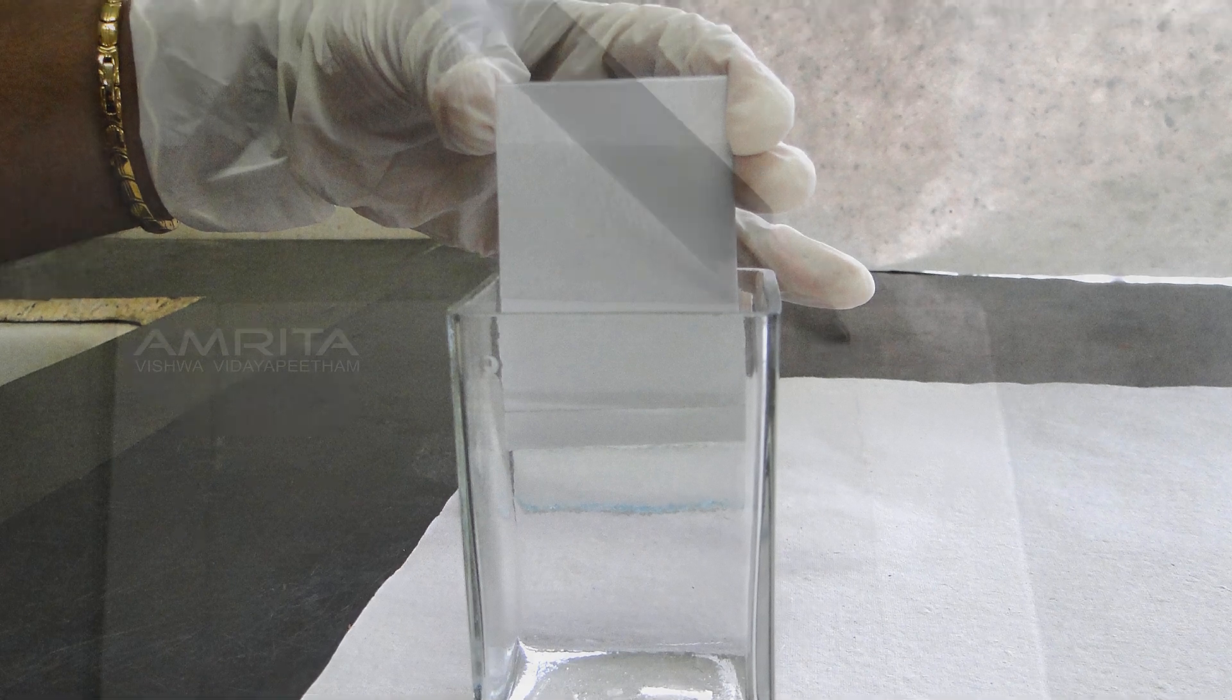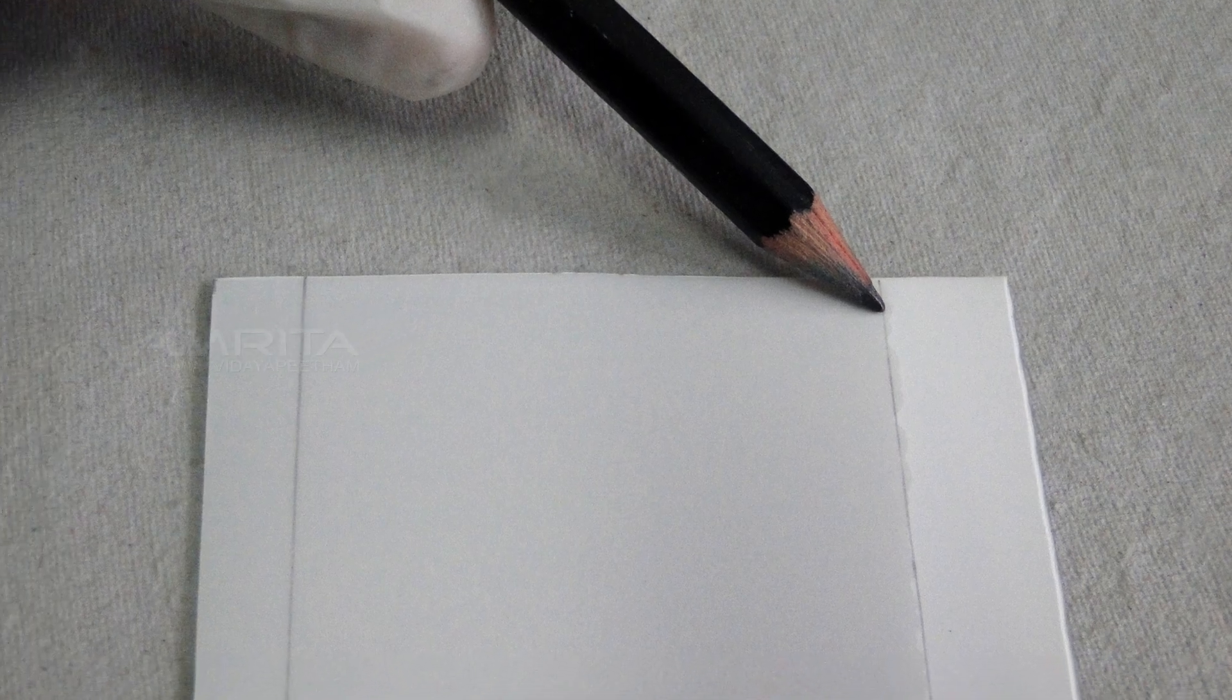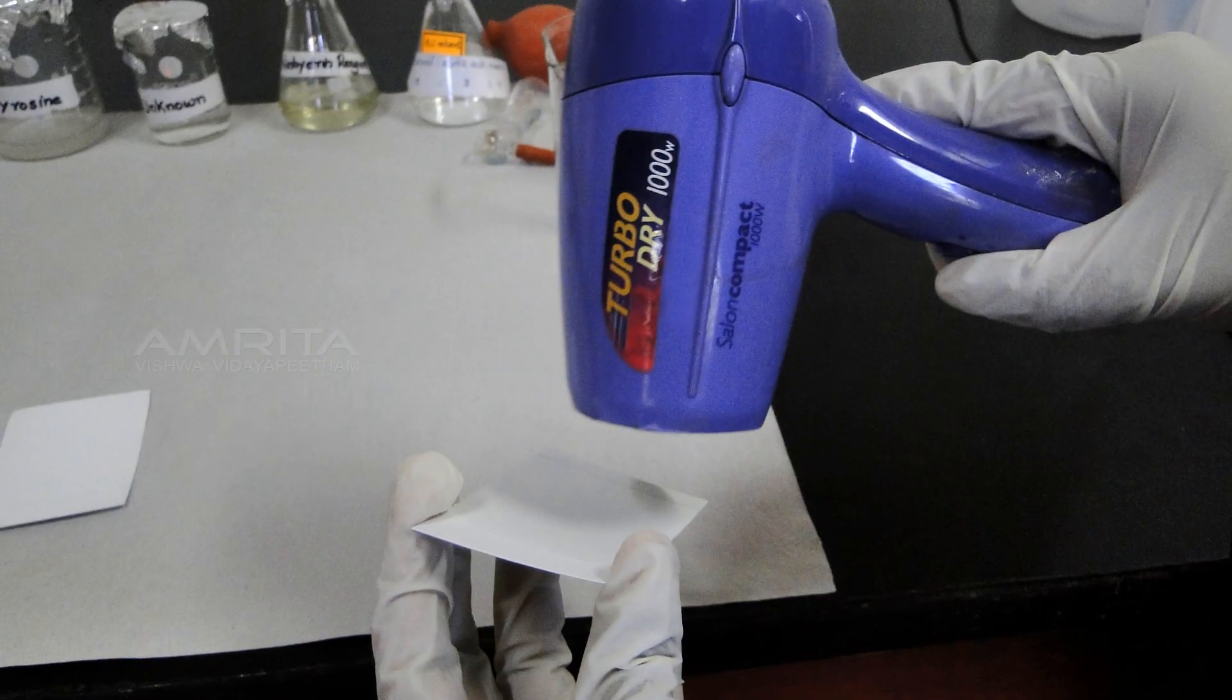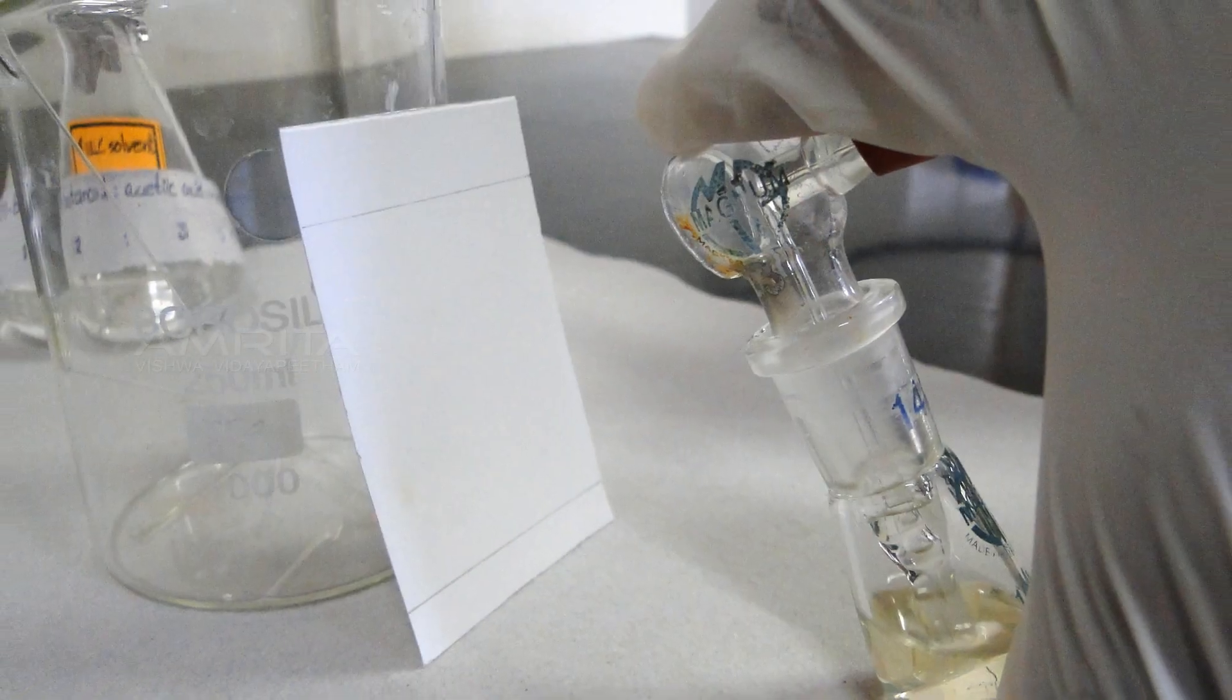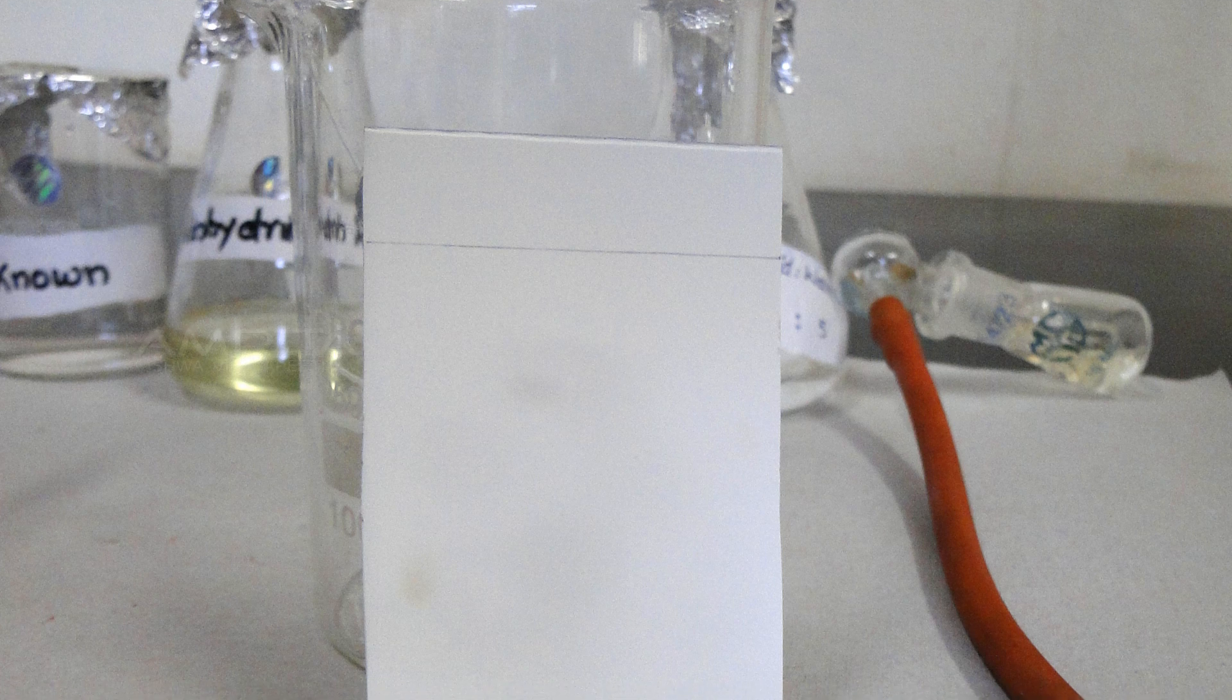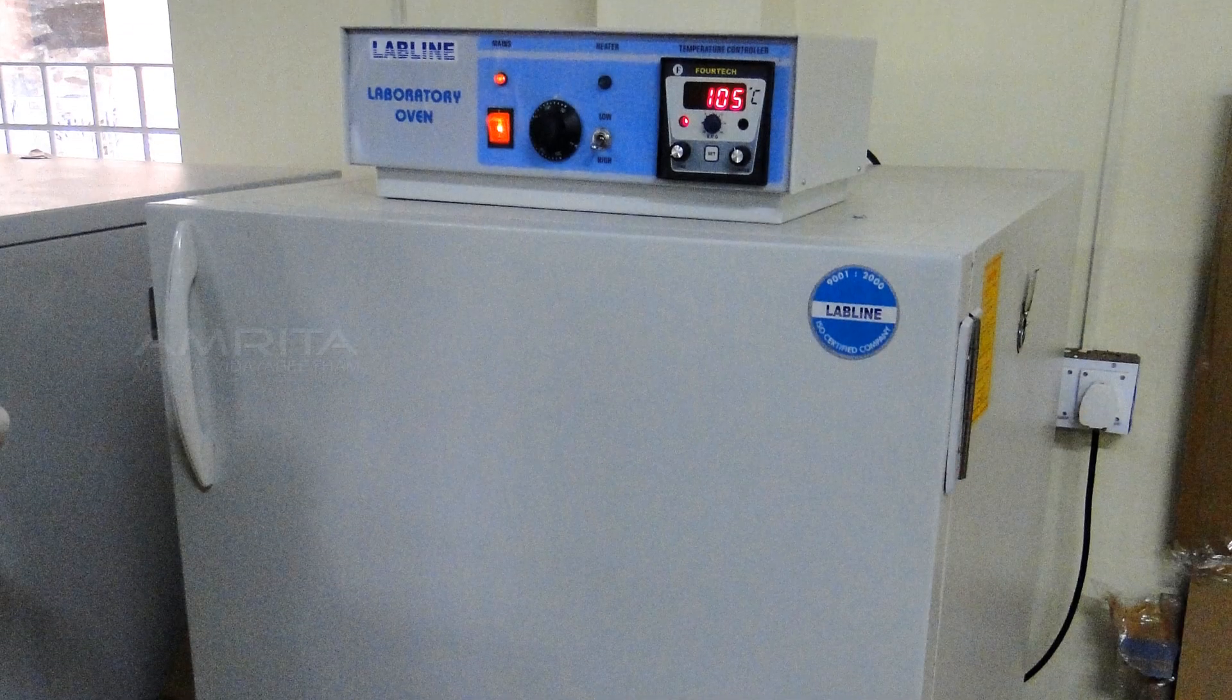Remove the plate and immediately draw a line across the solvent front. Dry the plate with the aid of a blow dryer. Spray the dry plate with ninhydrin reagent. Dry the plates in hot air oven at 105 degrees Celsius for 5 minutes.